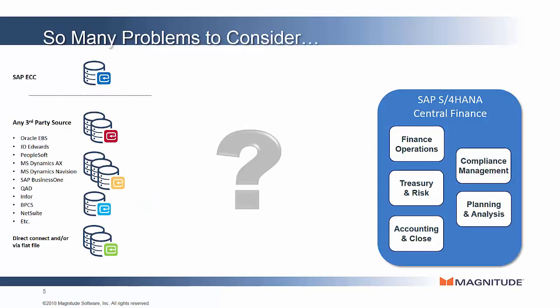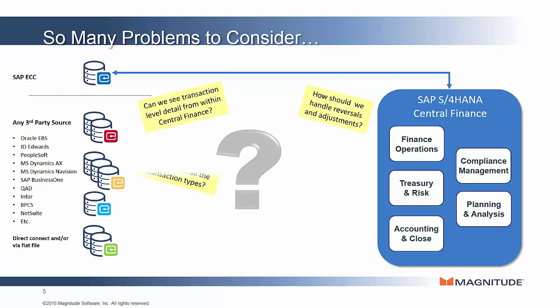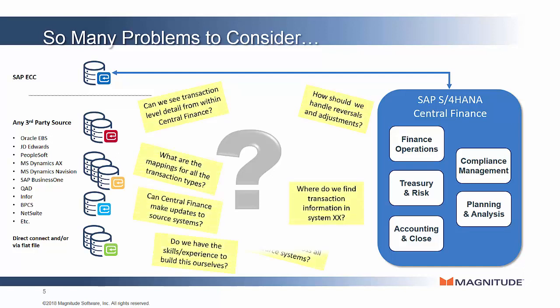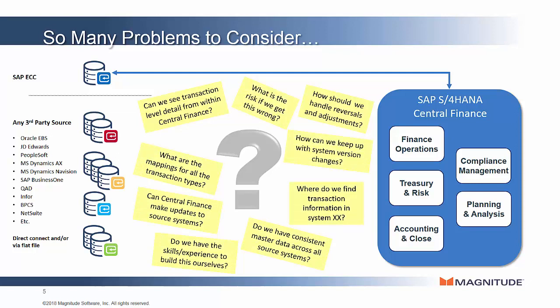But why would it be a problem? Well, it turns out that SAP provides pre-built connectors for SAP ECC as a source, but not for all the other sources that might be required, such as Oracle EBS, JD Edwards, PeopleSoft, Microsoft Dynamics, SAP Business One, QAD, Infor, BPix, to name only a few. This leaves customers with questions ranging from how do we get data out of source systems, to how do we write back to the sources if required, do we have the skills available, and what is the risk of building this ourselves?